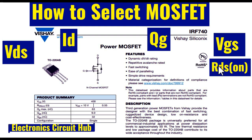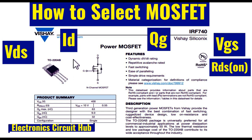ID² × RDS_on gives you the power loss. Today we are going to learn more about this power MOSFET — the IRF740, made by Vishay Siliconix. We will understand the different parameters of this power MOSFET and see how to select your MOSFET for your application after watching this video. Let us go back to the datasheet of the IRF740.